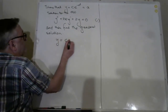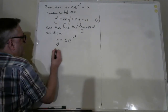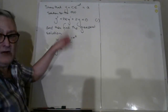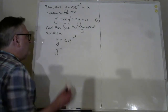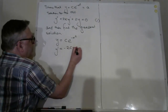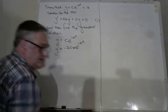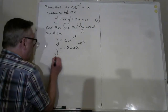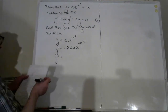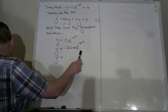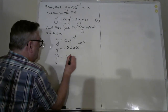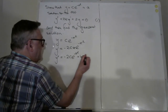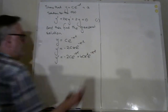We'll write down y equals c e to the minus x squared. And y prime is quite simply the derivative of this, which is minus 2cx e to the minus x squared. Then we have to find y double prime, the second derivative. If you differentiate this again, you find that you've got minus 2c e to the minus x squared, plus 4c x squared e to the minus x squared.